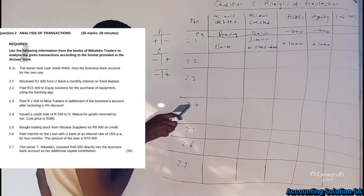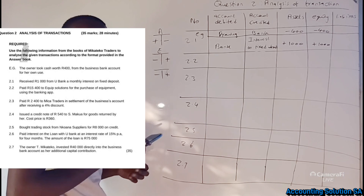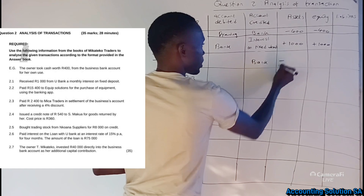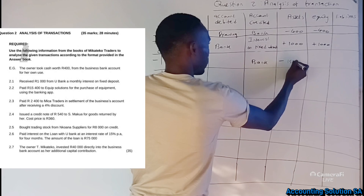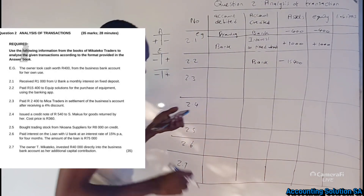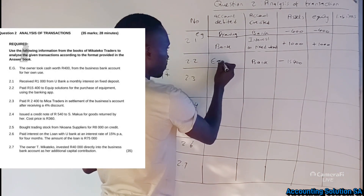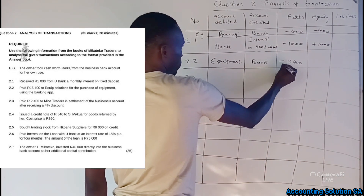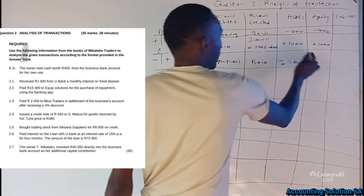Next: paid R15,400 to Equipment Solution to purchase equipment using the banking app. Money goes out, so assets decrease — Bank is minus R15,400. We purchased equipment, which is an asset, so equipment increases. Under assets we have a plus for Equipment and a minus for Bank — both on the same side.